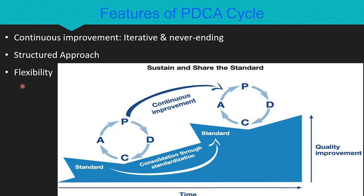The last feature of the PDCA cycle is its flexibility — it can be applied across various industries to bring continuous improvement to any organization. When we embrace the PDCA cycle, we embrace continuous improvement, and that is the key to success and excellence. I highly recommend applying the PDCA cycle in your organization properly and effectively to achieve long-lasting improvement in every aspect of your organization.